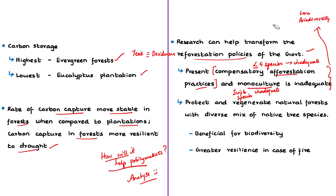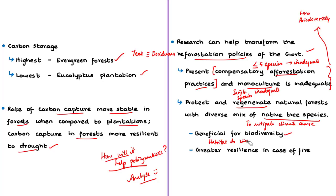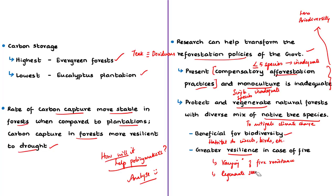It is better to protect and regenerate natural forests that have a diverse mix of native tree species. This is more reliable in the long term as a strategy for mitigating climate change, because species-rich forests are beneficial for biodiversity and provide habitat for many components like insects and birds. Multi-species forests would also show greater resilience in case of forest fires, as different trees have varying degrees of fire resistance depending on bark thickness and ability to regenerate. This research study can help transform the reforestation policies of the government.